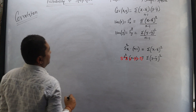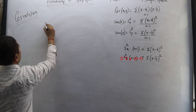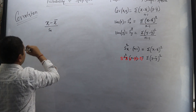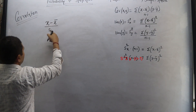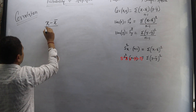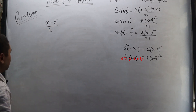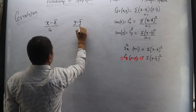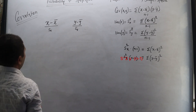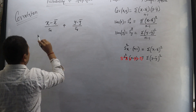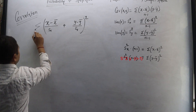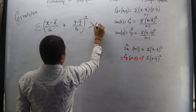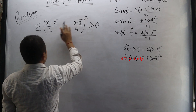Now let us normalize both variables x and y. We take variable x, subtract its mean, and divide by its standard deviation — so t equals (x − x̄) / s_x. Similarly for y: we take y, subtract its mean, and scale by its standard deviation. Now let us write the sum of [(x − x̄)/s_x + (y − ȳ)/s_y]² and note this is greater than or equal to 0, since we are taking a sum of squares.